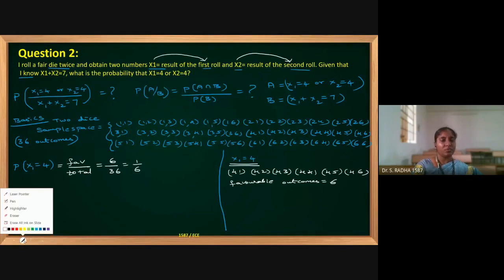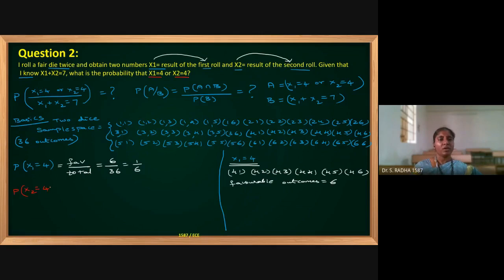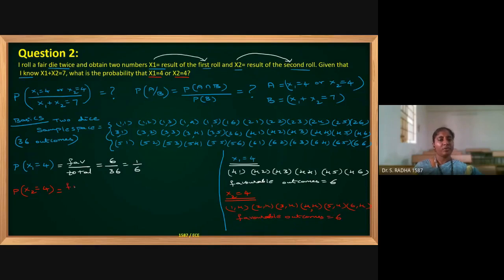Next, what is the probability that x2 equals 4? Here, 4 must appear in the second roll. The favorable outcomes are: (1,4), (2,4), (3,4), (4,4), (5,4), (6,4) — six favorable outcomes. So probability of x2 equals 4 is 6 by 36, which is 1/6.